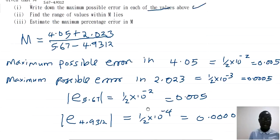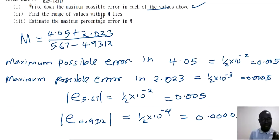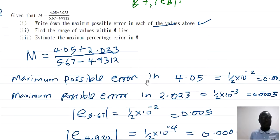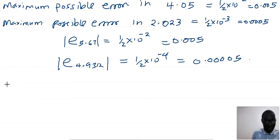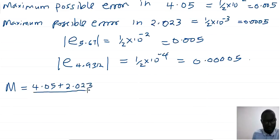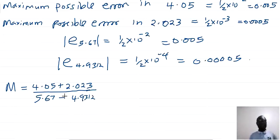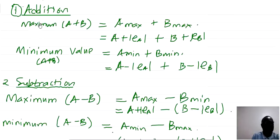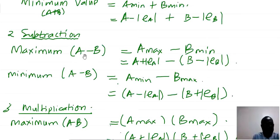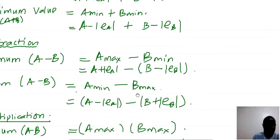Now, before we find the range, we need to find both the maximum and the minimum values of M. M equals (4.05 plus 2.023) divided by (5.67 minus 4.9312). In addition, to get the maximum we maximize both values; to get the minimum we minimize both. In subtraction, the maximum requires the first value to be maximum and the second minimized.